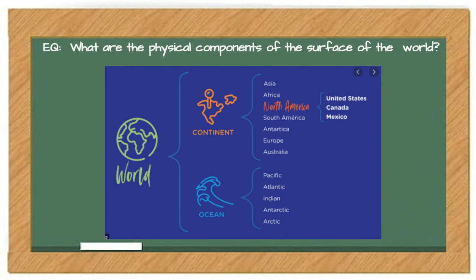Here's an upper grade example with an essential question: what are the physical components of the surface of the world? They started with the world. That's our whole. And then they broke it into continents and oceans. Then they broke continents down into each individual continent and each individual ocean.